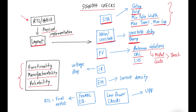The next category is IR drop. Through IR analysis, we ensure all standard cells receive the desired voltage from the power grid. If there is too much voltage drop across the power grid, standard cells will operate at a lower voltage — for example, 0.95V instead of 1V — making them slower and causing timing issues in the design.